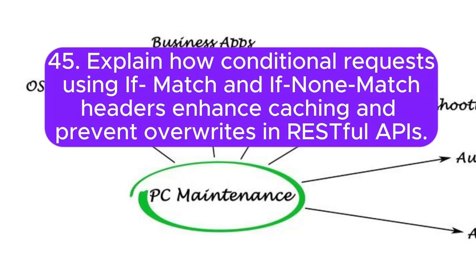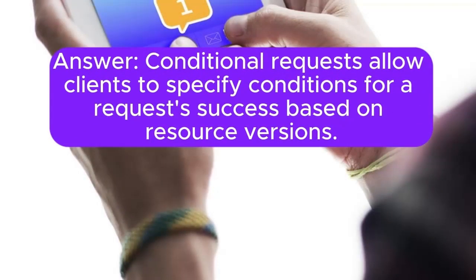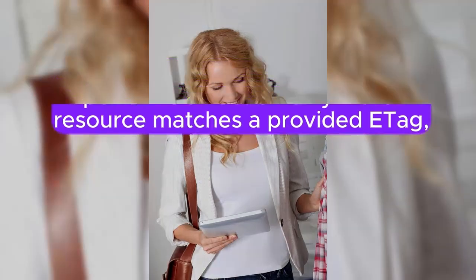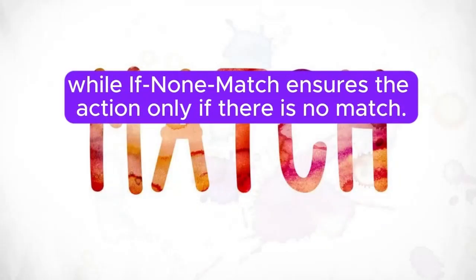Question 45: Explain how conditional requests using If-Match and If-None-Match headers enhance caching and prevent overwrites in RESTful APIs. Conditional requests allow clients to specify conditions for request success based on resource versions. If-Match ensures the server performs an action only if the resource matches a provided ETag, while If-None-Match ensures the action only if there is no match.